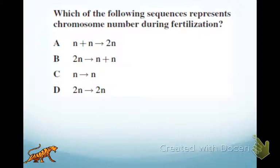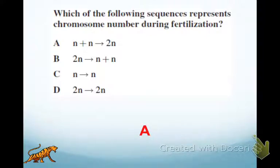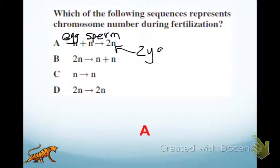Here's a review question: which of the following sequences represents chromosome number during fertilization? Pause for a second and see if you can come up with the answer. The answer is A, because that number N refers to our haploid number. So we would have a haploid egg being fertilized by a haploid sperm, and we have a zygote — just to review vocabulary — a zygote which is diploid.